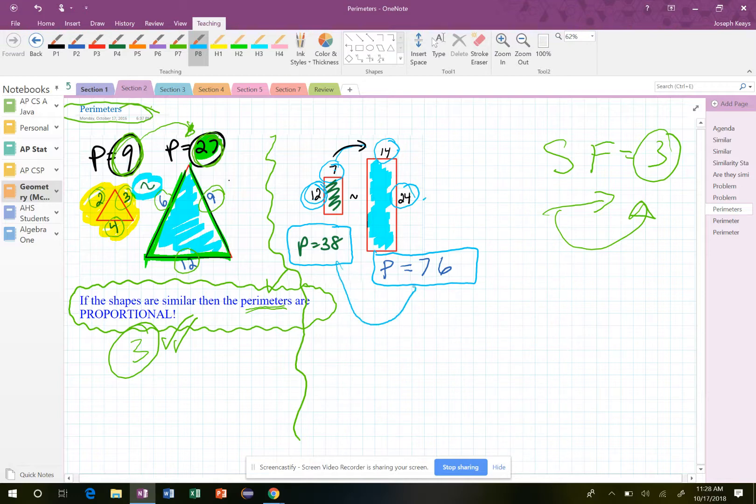So everything gets enlarged by 2. So not only do the sides get enlarged by 2, but the perimeters get enlarged by 2 as well. And so if you take 38 and multiply by 2, you get 76. All right, let's do another problem like this in the next video and let's try to finish up.